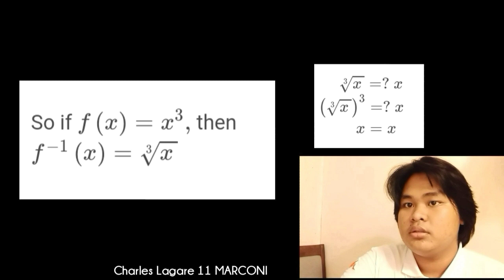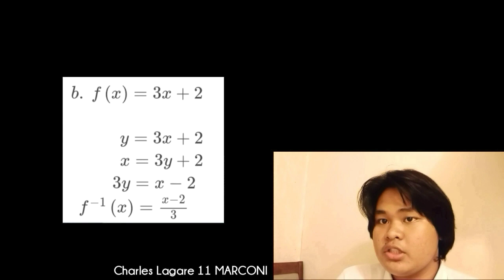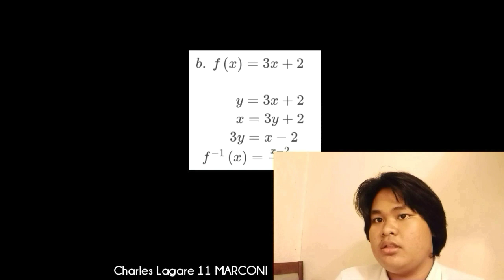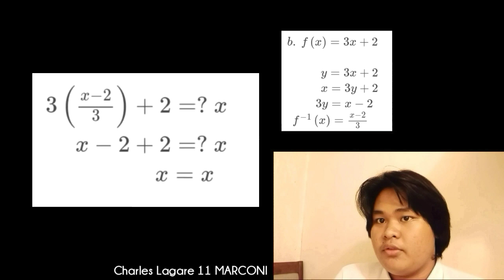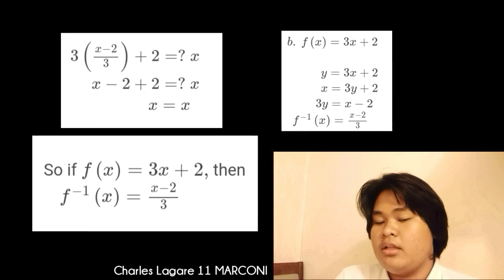For letter b: f of x equals 3x plus 2, so y equals 3x plus 2. Swap variables: 3y equals x minus 2. Divide both sides by 3: f inverse of x equals x minus 2 over 3. To verify, substitute back: 3 times (x minus 2 over 3) plus 2 equals x, then x minus 2 plus 2 equals x, combining like terms gives x equals x. Therefore, if f of x equals 3x plus 2, then f inverse of x equals x minus 2 over 3.